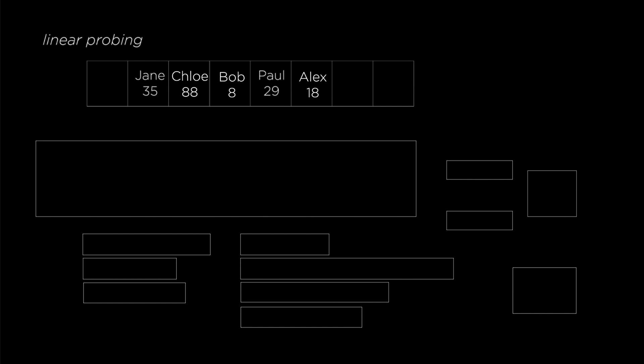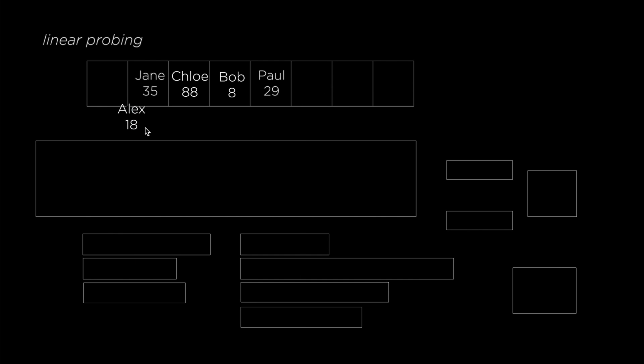Linear probing is an okay approach, but it could be inefficient when you have a lot of elements, because elements are likely to start forming clusters. For example, if you have a cluster of five elements, it would take extra time to go through all of them to find an empty spot.